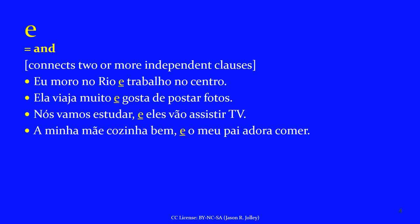Let's jump into our series of coordinating conjunctions from Brazilian Portuguese, starting with the simplest and most obvious: E, which means 'and.' It connects two or more independent clauses. 'Eu moro no Rio e trabalho no centro.' 'Ela viaja muito e gosta de postar fotos' — she travels a lot and she likes to post pictures. 'Nós vamos estudar e eles vão assistir TV' — we're going to study and they are going to watch TV. 'A minha mãe cozinha bem e o meu pai adora comer.' Two independent clauses joined with the coordinating conjunction E.